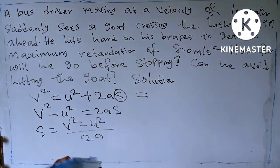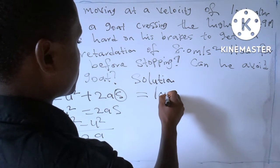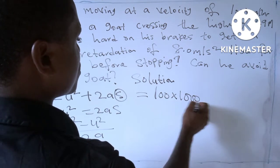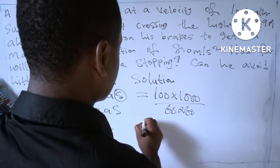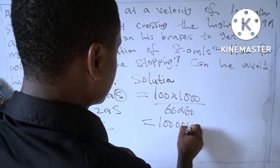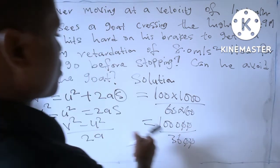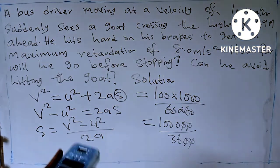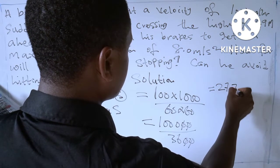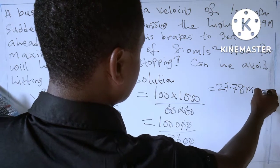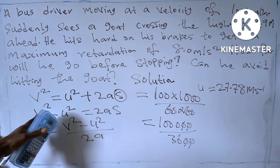Our initial velocity is 100 kilometers per hour, so let's convert that to meters per second: 100 × 1000 / (60 × 60) = 100,000 / 3600. Simplifying, we get 1000 / 36, which equals 27.78 meters per second. So our initial velocity u = 27.78 m/s.